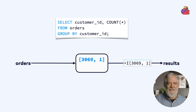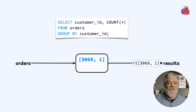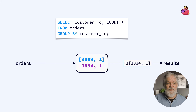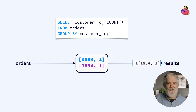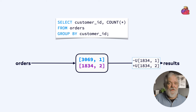As the first order is processed, the Flink runtime records internally the fact that one order has been processed for customer 3069, and emits an event describing how the end result has now been changed — namely that an entry for this customer has been inserted with a value of 1. And for the next order, we do the same thing, but this time for customer 1834. With the third order, the effect is a bit different. This time, the result is an update of the count for customer 1834 from 1 to 2, expressed as a retraction of the previous query, along with an update.